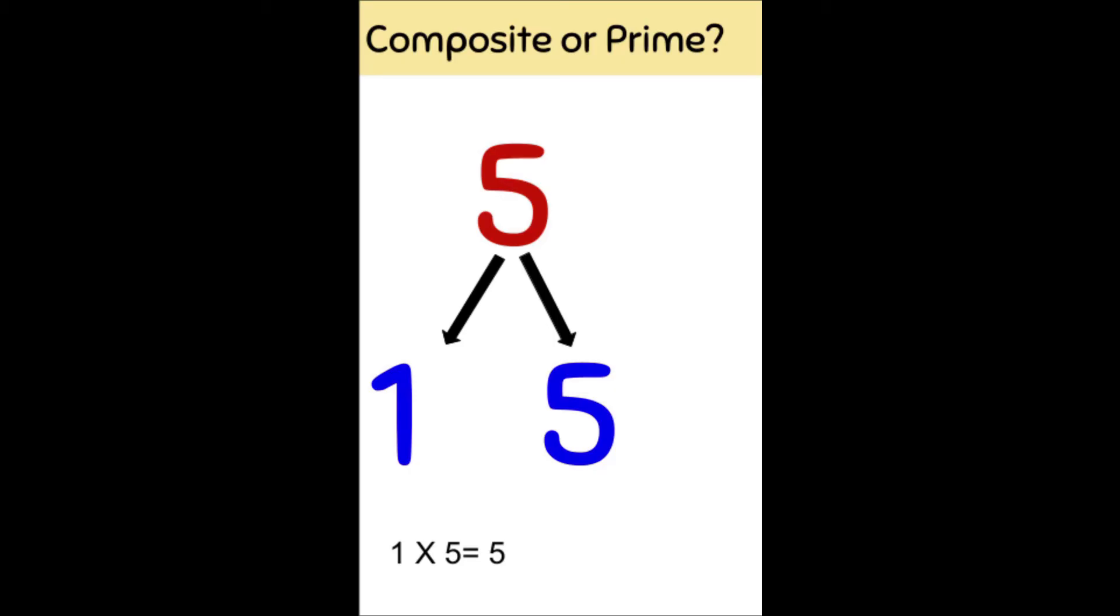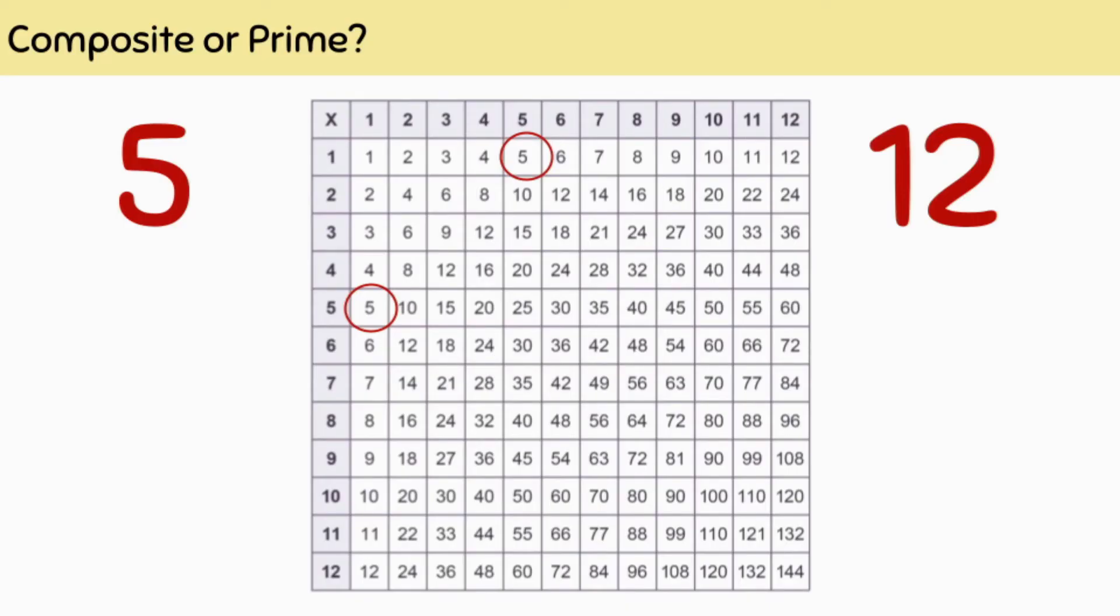Another way I can check this is by seeing what I can divide five by to give us a whole number. Five is an odd number, so it doesn't divide by two. I can't make three equal groups from five either or four.